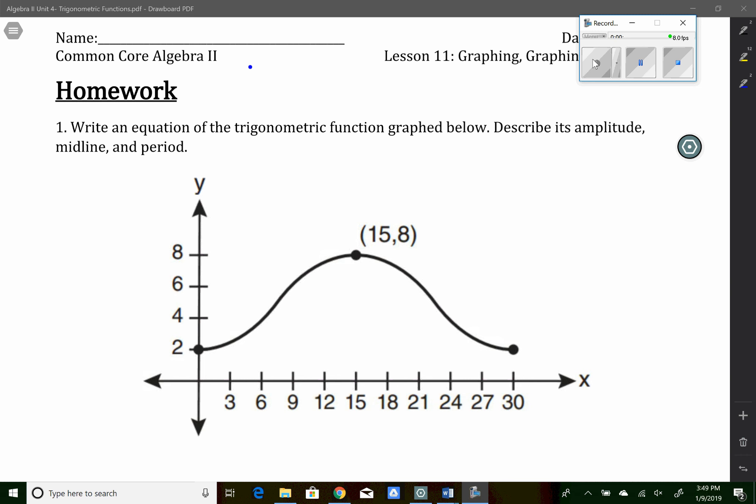I see a minimum value of 2 and a maximum value of 8, which means the midline is going to be halfway between those two, so the midline is actually going to be 5. So I could say the midline is y equals 5. The amplitude is how far the midline is to the maximum value, so the amplitude in this case is going to be 3.